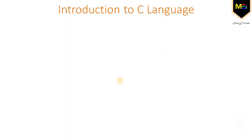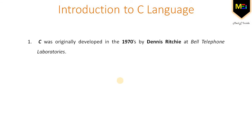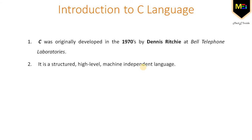Now, coming over to the introduction to C language. Let's start with a short history. C was originally developed in the 1970s by Dennis Ritchie at Bell Telephone Laboratories. It is an outgrowth of two earlier languages called BCPL and B, which were also developed at Bell Laboratories. It seems a strange name for a programming language, but this strange-sounding language is one of the most popular computer languages because it is a structured, high-level, machine-independent language. It is also a robust language whose rich set of built-in functions and operators can be used to write any complex program.